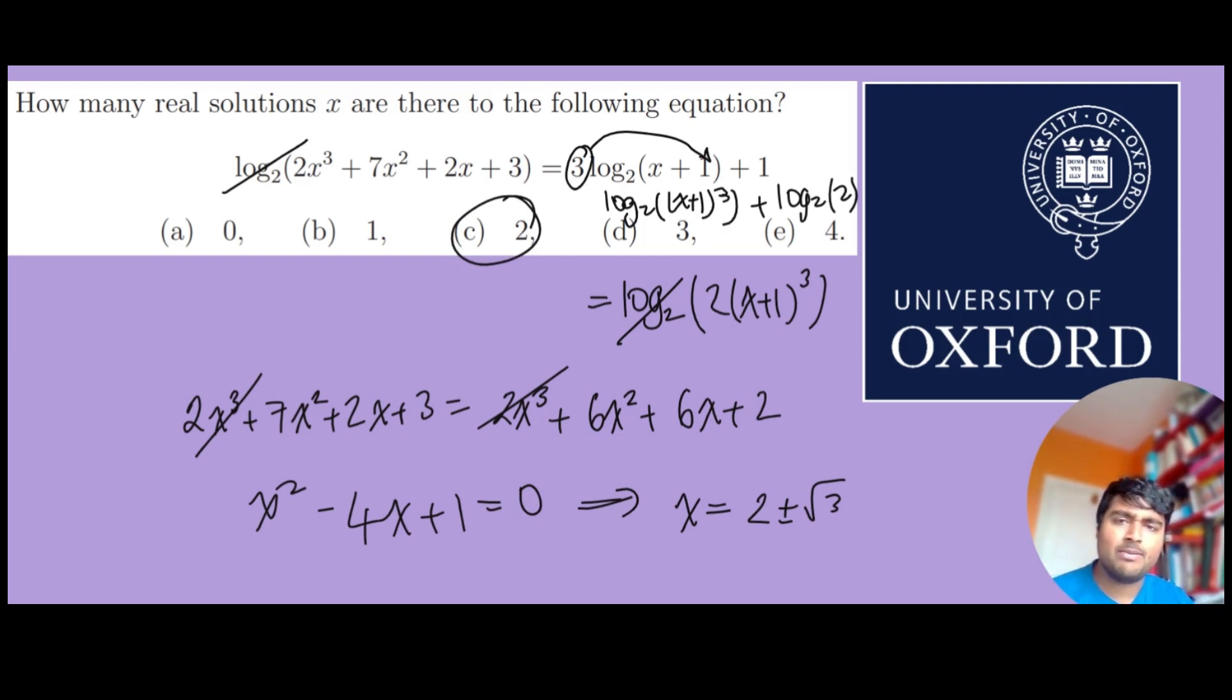but technically we should be careful and make sure both of these are indeed valid solutions, especially since we're dealing with logarithms. 2 + √3 is positive, that's fine. 2 - √3 is also positive because √3 is less than 2.